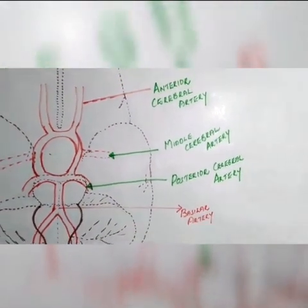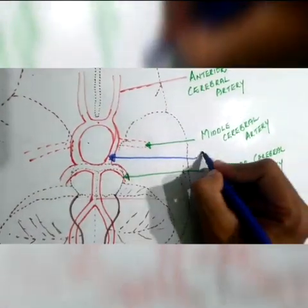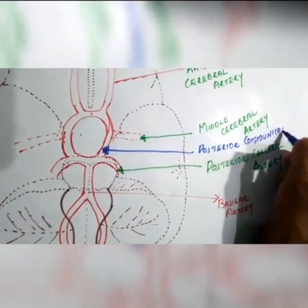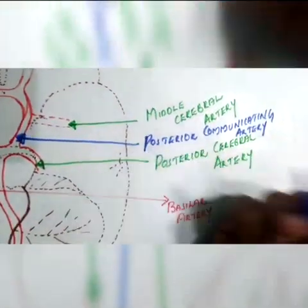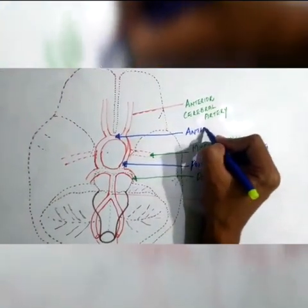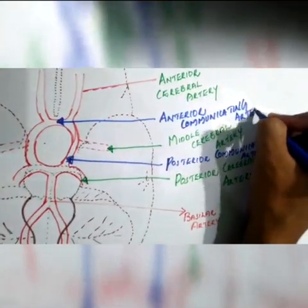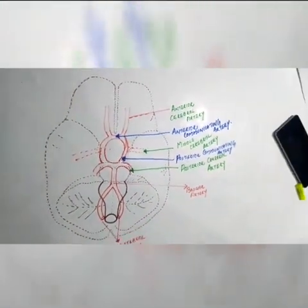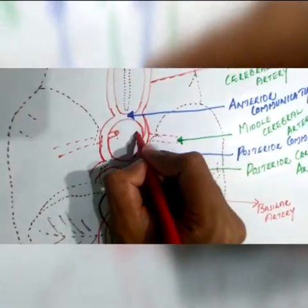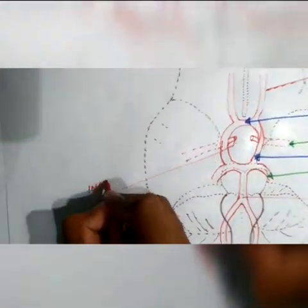It is important to discuss the two communicating arteries: the posterior communicating artery and the anterior communicating artery. The posterior communicating artery is the communication between the middle and the posterior cerebral arteries. The anterior communicating artery is the connection between the two anterior cerebral arteries. And finally, here we have the internal carotid arteries.